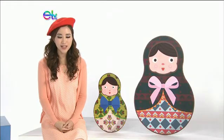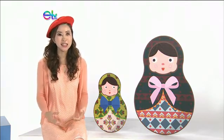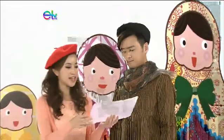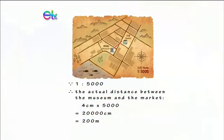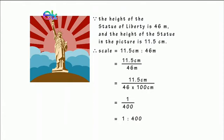Another application of ratio is in scale drawing. A scale drawing is a reduced or enlarged drawing of a real object, so the object in the drawing is always similar to the original. A scale indicates the ratio of the length in the drawing to the corresponding length of the real object. A map is a common example. On a 1 to 5,000 scale map, if the distance between a museum and a market is 4 centimeters, then the actual distance is 20,000 centimeters, which is 200 meters. With a walking speed of 5 km/h, a person takes 2.4 minutes to walk this distance. For a photo of the Statue of Liberty — 11.5 cm tall in the image, 46 meters in reality — the scale would be 1 to 400.